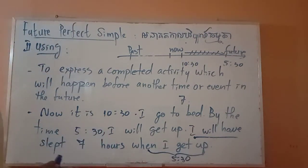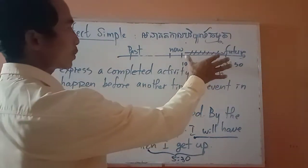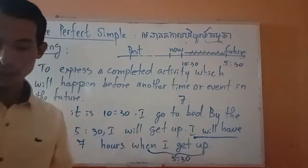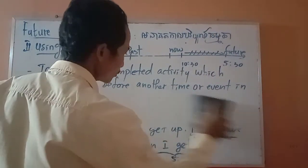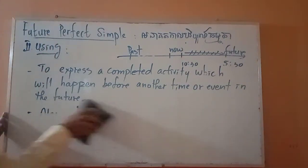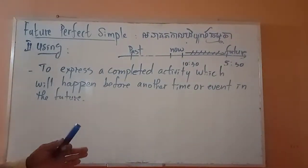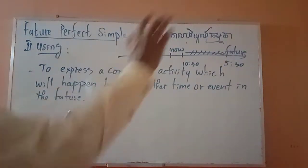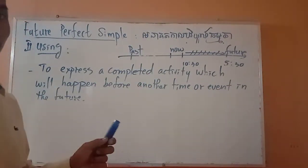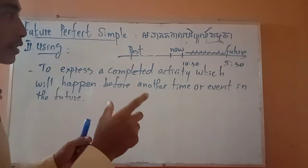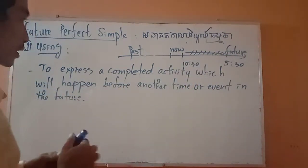Understand? Future perfect simple is used to talk about something that happens before a point in the future. We want to talk about any action that happens before a time in the future.